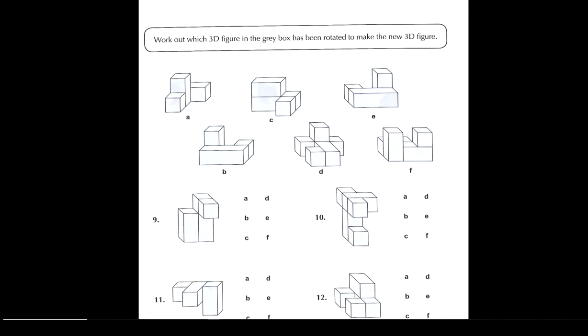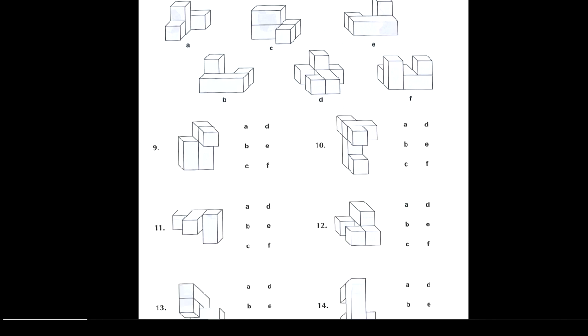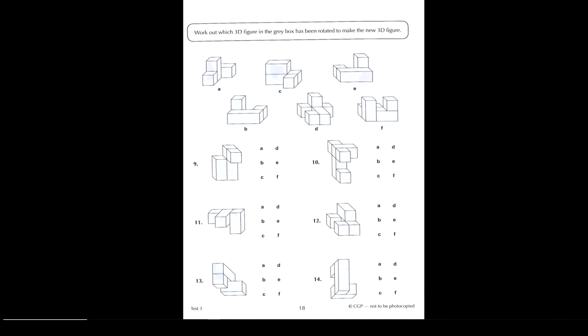Okay, next — work out which 3D figure in the grey box has been rotated to make the new 3D figure. Let's start with Kinza — number nine. Is it C? Yes, number nine is C. You have to visually imagine the shape being turned around — this one here has been turned around this way, and then turned around that way, to make it lie down on the side to give you C. Question number ten — Faha. Number ten is D, because you can see those two feet parts on the bit that's sticking out, and if you were to turn it sideways and turn it around — so there's a lot of rotation going on.